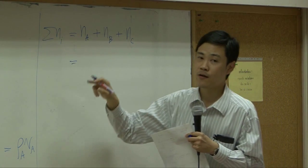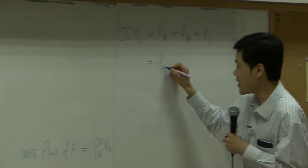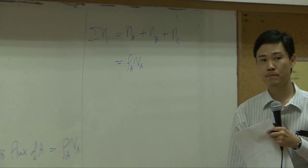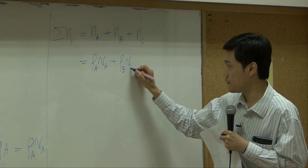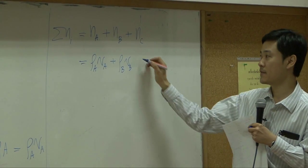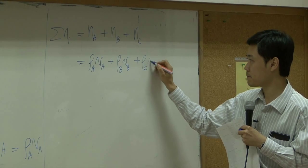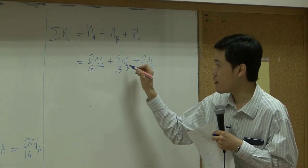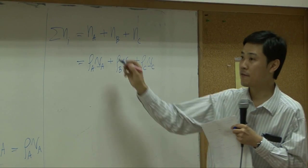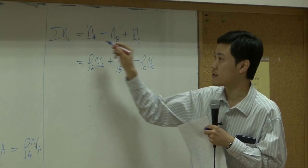Na, according to this derivation, is equal to rho A, VA. NB supposed to be equal to rho B, VB. And same thing for NC. Again, all of these are vectors. So therefore, N supposed to be a vector.